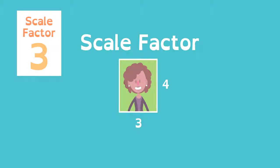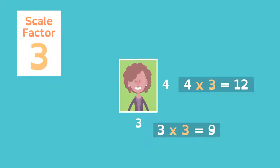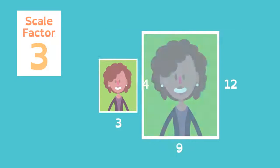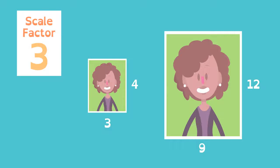If the scale factor is 3, the dimensions from the center of dilation are multiplied by 3. Different sizes, same proportions, same shape.